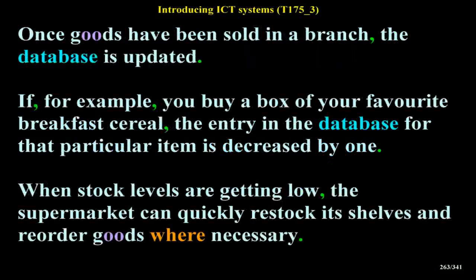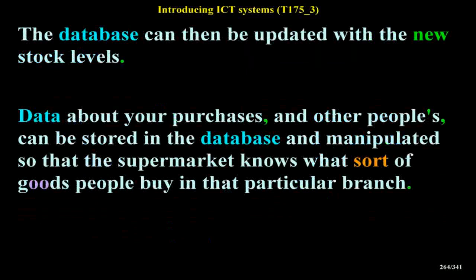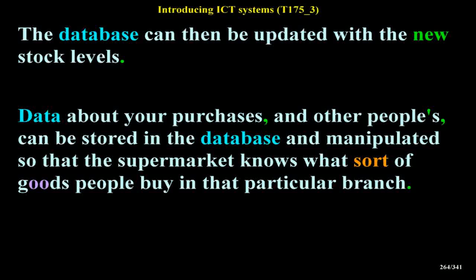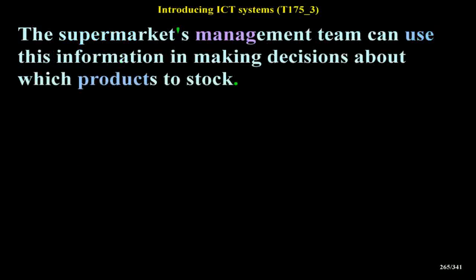Once goods have been sold in a branch, the database is updated. If you buy a box of your favorite breakfast cereal, the entry in the database for that particular item is decreased by 1. When stock levels are getting low, the supermarket can quickly restock its shelves and reorder goods where necessary. Data about your purchases, and other people's, can be stored in the database and manipulated so that the supermarket knows what sort of goods people buy in that particular branch. The supermarket's management team can use this information in making decisions about which products to stock.